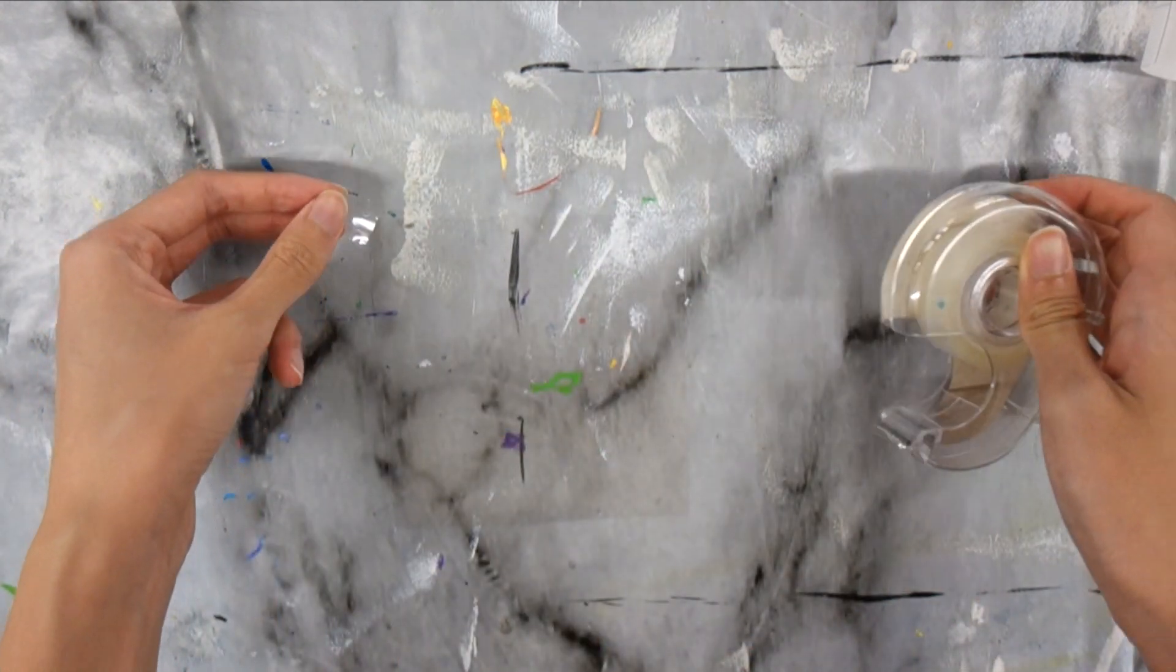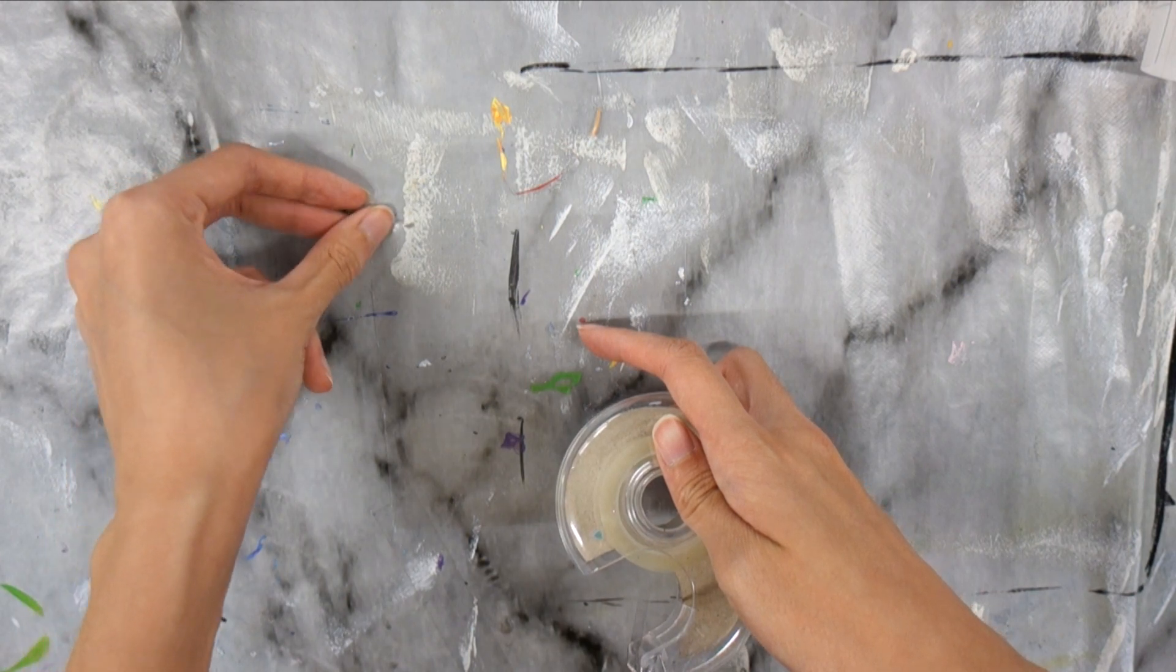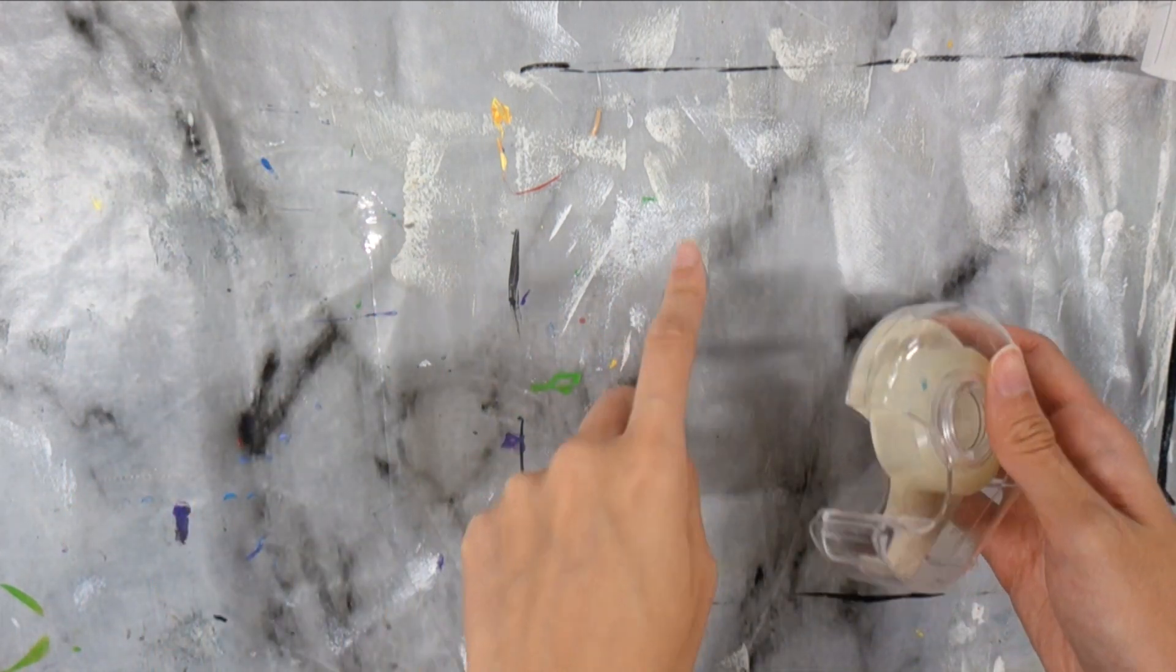To keep the square in place on your table, put some tape on the top two corners of the square.